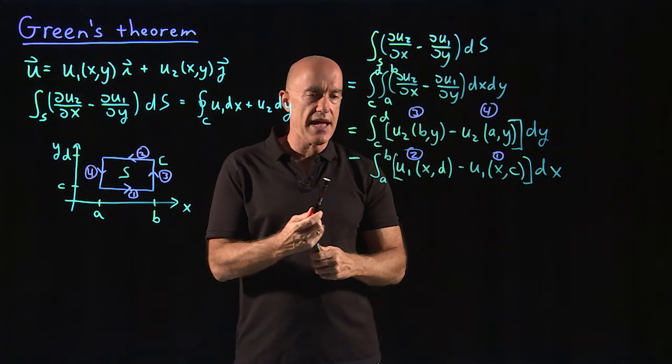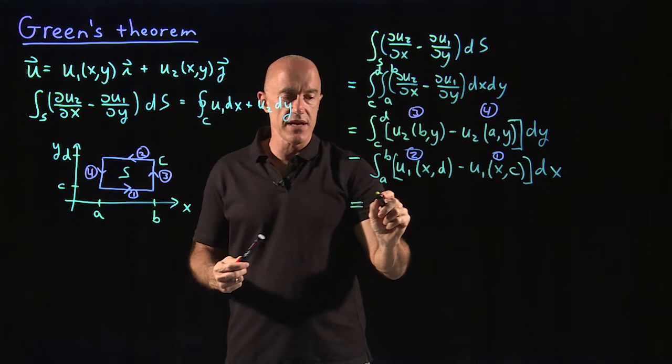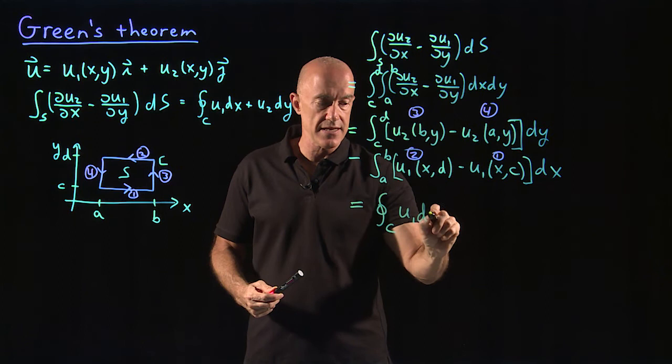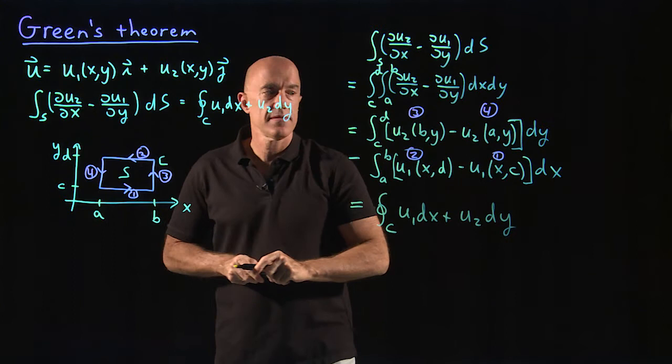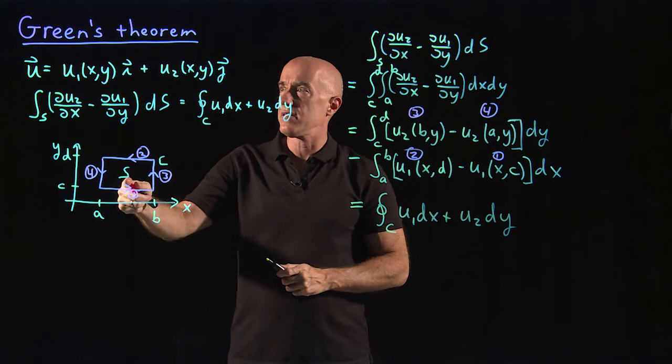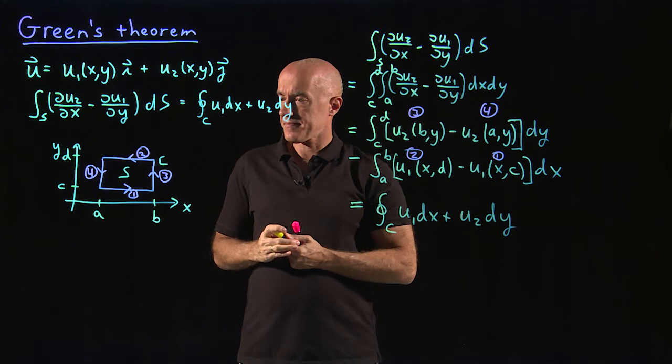So putting this together, we have the integral here, which we can write as the integral over this closed curve of u1 dx plus u2 dy. That's Stokes' theorem in the plane, which is called Green's theorem.